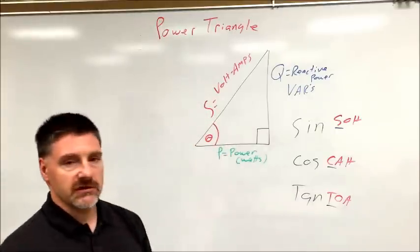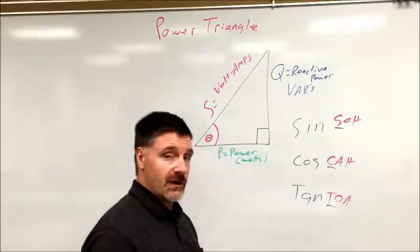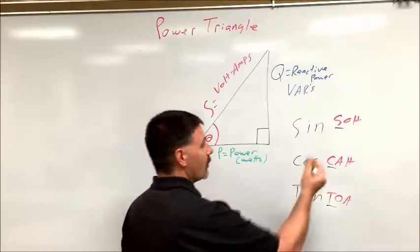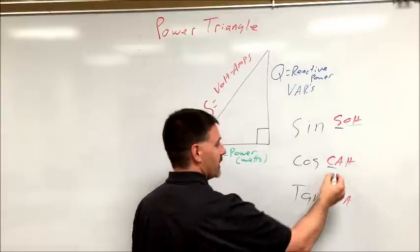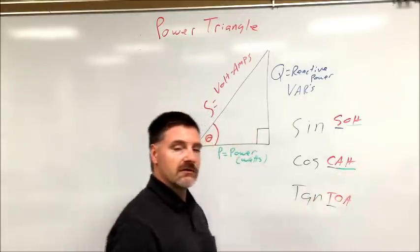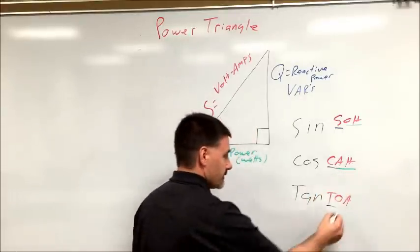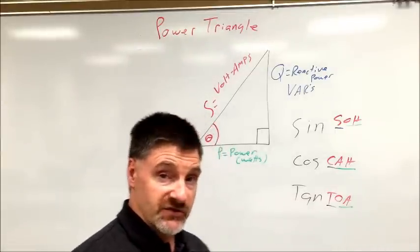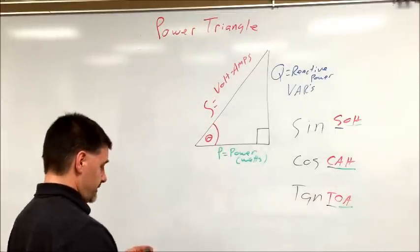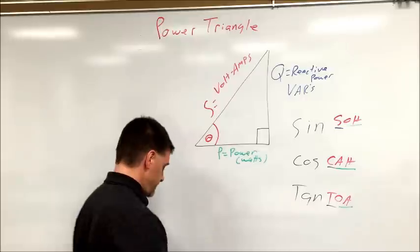The last two letters in each tell you the function you have to do in order to solve it. OH stands for opposite over hypotenuse, AH stands for adjacent over hypotenuse, OA stands for opposite over adjacent. Those would be your division problems in order to find the other side, the missing side.